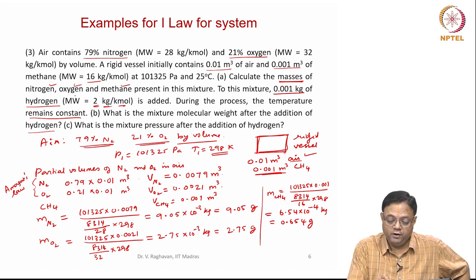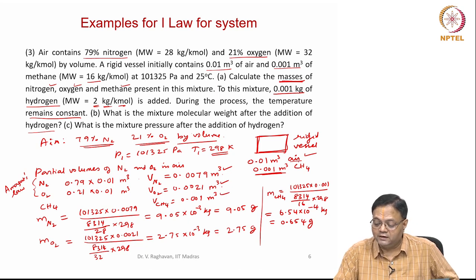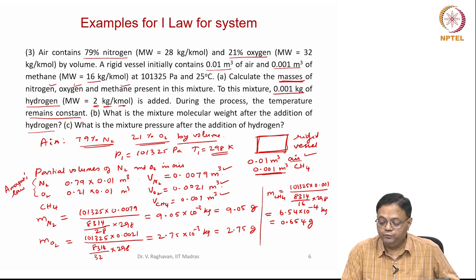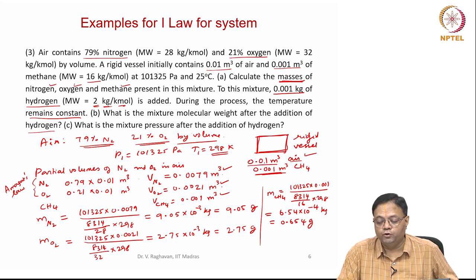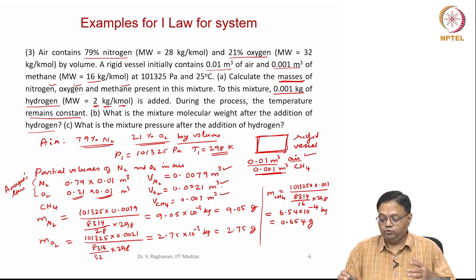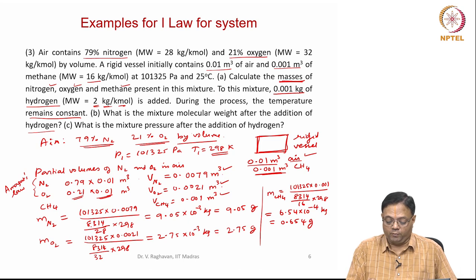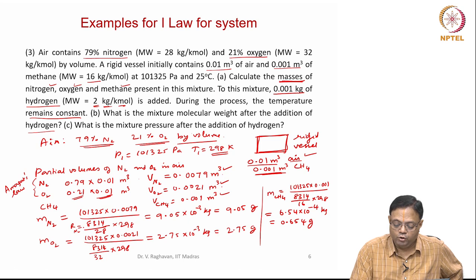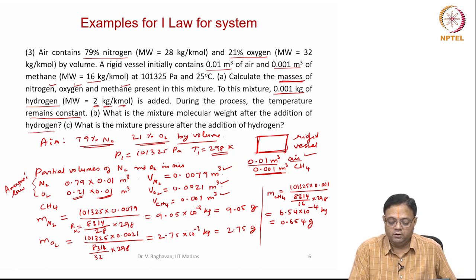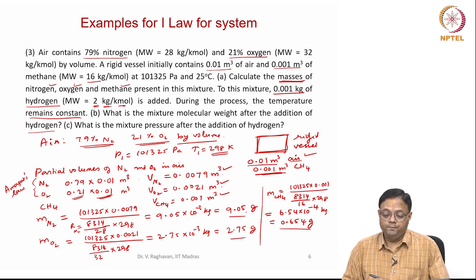So the masses of the individual components are what was asked. For that we calculated the partial volumes because air itself is a mixture. By Amagat's law, if the total volume occupied by air is 0.01, the volume occupied by nitrogen will be mole fraction into this volume. Once the partial volumes are known, masses can be calculated using P into partial volume divided by specific gas constant R into temperature — the ideal gas equation of state.